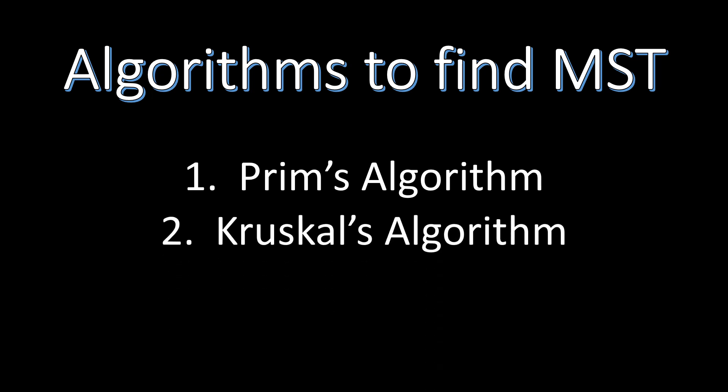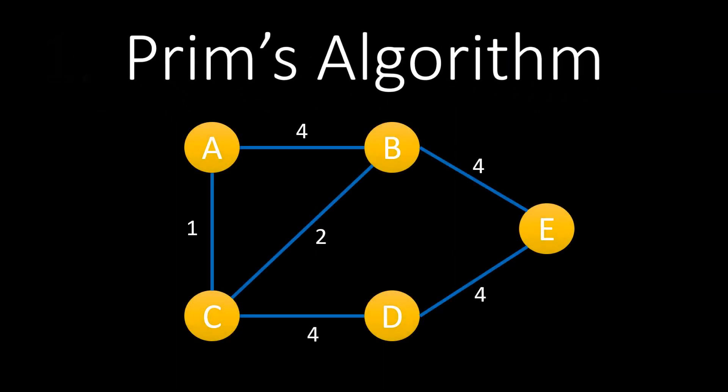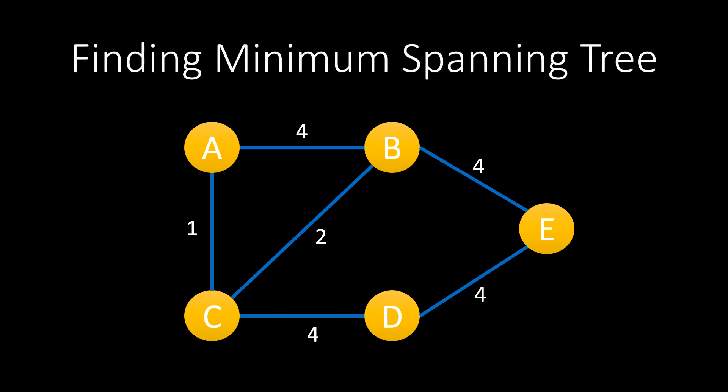There are two widely popular algorithms used in order to find a Minimum Spanning Tree of a graph. The first one is Prim's algorithm which we will be discussing in this video. The second is Kruskal's algorithm which we will cover in the next video. Let's take this undirected weighted and connected graph and we need to find the Minimum Spanning Tree for the same.